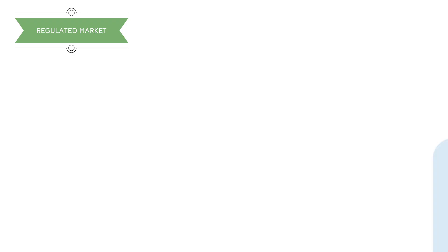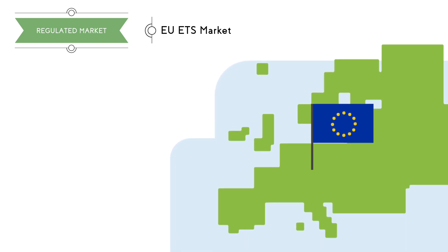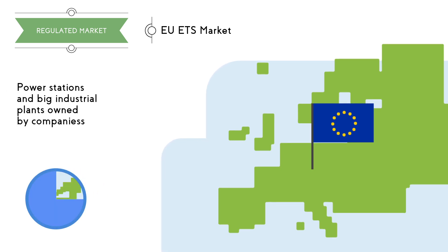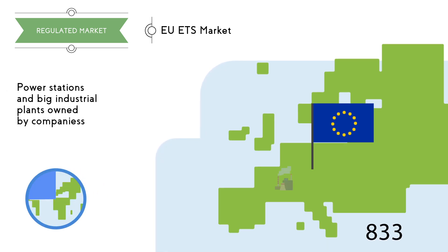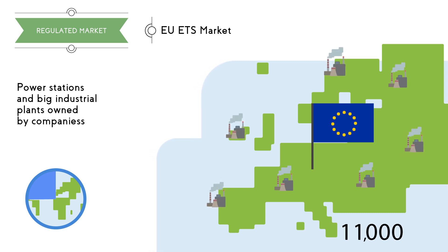For example, the EU emission trading system is the largest emission trading market in the world, accounting for more than three quarters of international carbon trading. Its activity limits the emissions of 11,000 power plants and large industrial facilities belonging to some 5,000 companies.